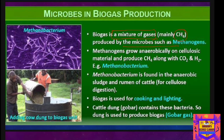Biogas is produced by the action of microbes called methanogens. Certain bacteria grow anaerobically on cellulosic material and produce a large amount of methane along with carbon dioxide and hydrogen. These bacteria are collectively known as methanogens or Methanobacterium.